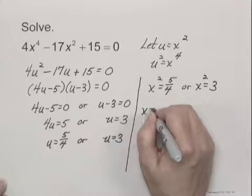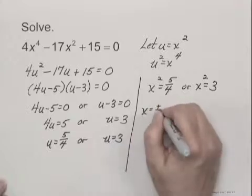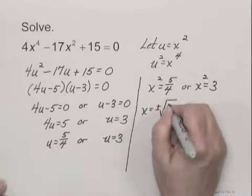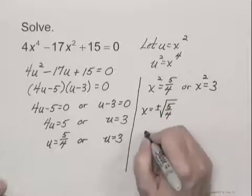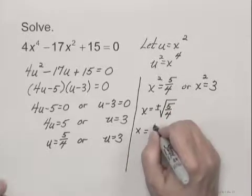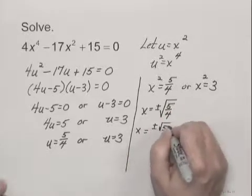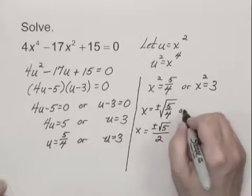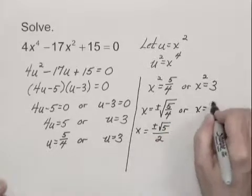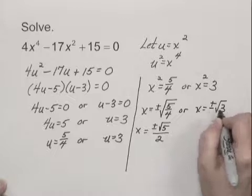Solving for x, we get x equals plus or minus the square root of 5 fourths, which is plus or minus the square root of 5 over 2, or x equals plus or minus the square root of 3.